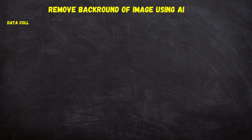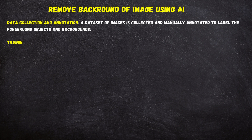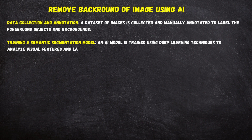Data Collection and Annotation: A dataset of images is collected and manually annotated to label the foreground objects and backgrounds. Training a Semantic Segmentation Model: an AI model is trained using deep learning techniques to analyze visual features and label each pixel as foreground or background.